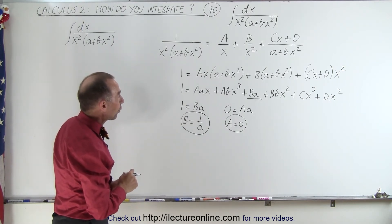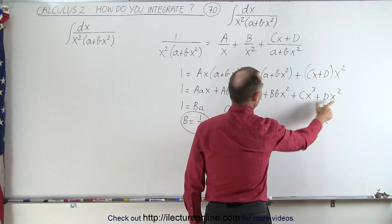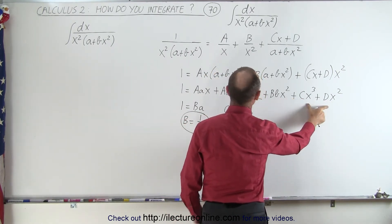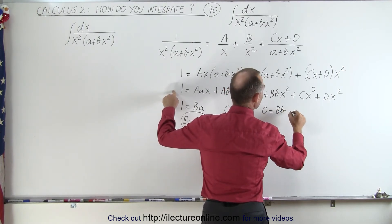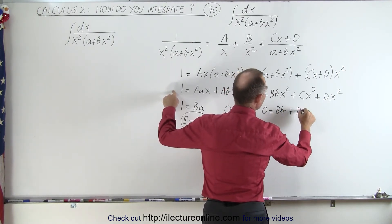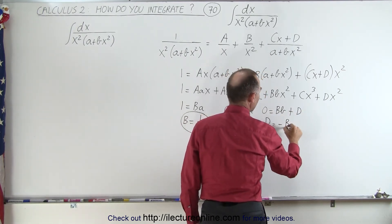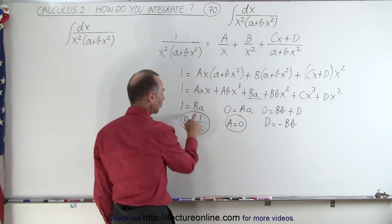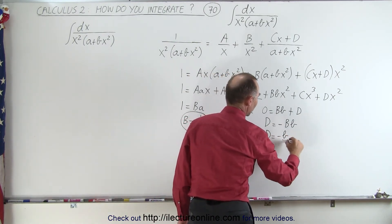Now let's go for, we have an x squared term and an x squared term there. So we'll take the coefficients, add them together, and set it equal to 0. So 0 is equal to capital B times B plus D, which means that D is equal to minus capital B times B, and B was 1 over a, which means that D is equal to minus B over a.